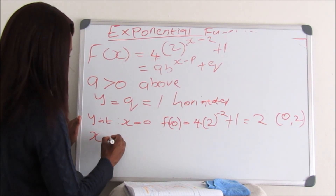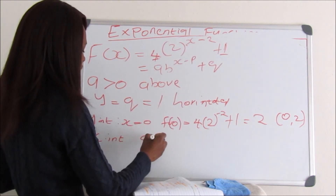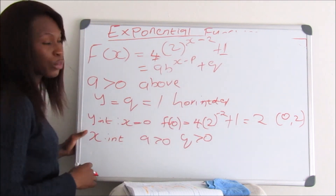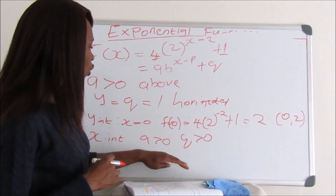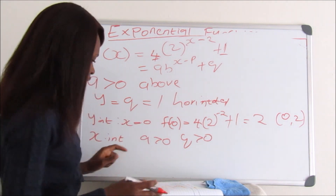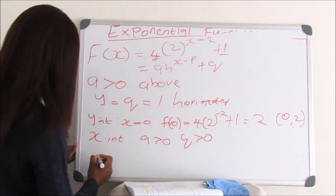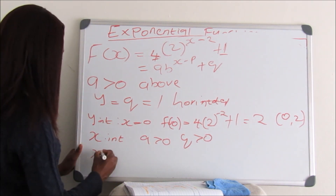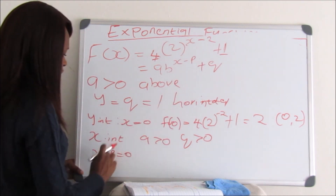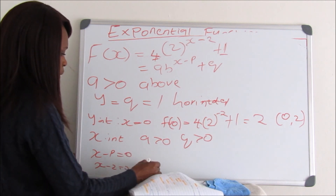To find the X-intercept, we look at A and Q. Since A is greater than 0 and Q is also greater than 0, we do not have any X-intercept because the graph lies above the X-axis. To find another point, we use the method of making X minus P equal to 0. Since P equals 2, we get X equals 2.